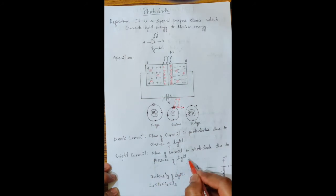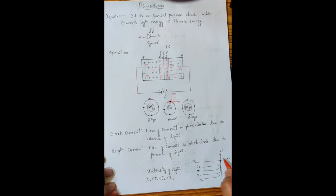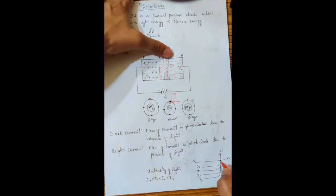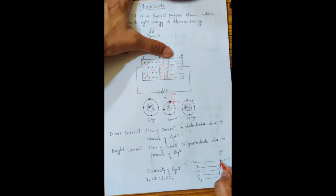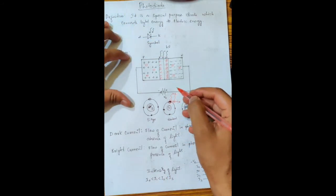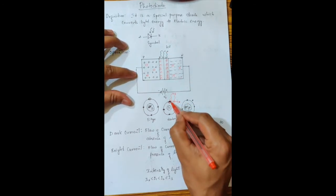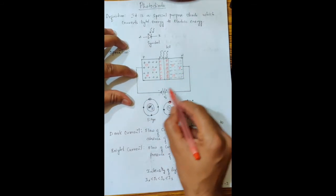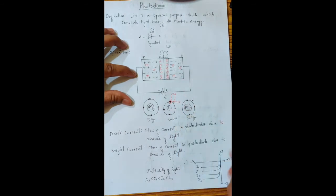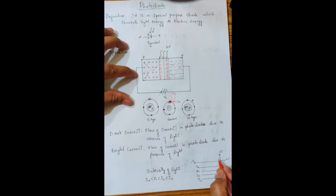Looking at the VI characteristics plot for the photo diode: since it is operated in reverse bias condition, in the absence of light a small reverse saturation current — dark current I₀ — flows. As the intensity of light increases, more electrons get ejected, free charge carriers increase, and the bright current also increases. So as intensity increases, the amount of bright current also increases.